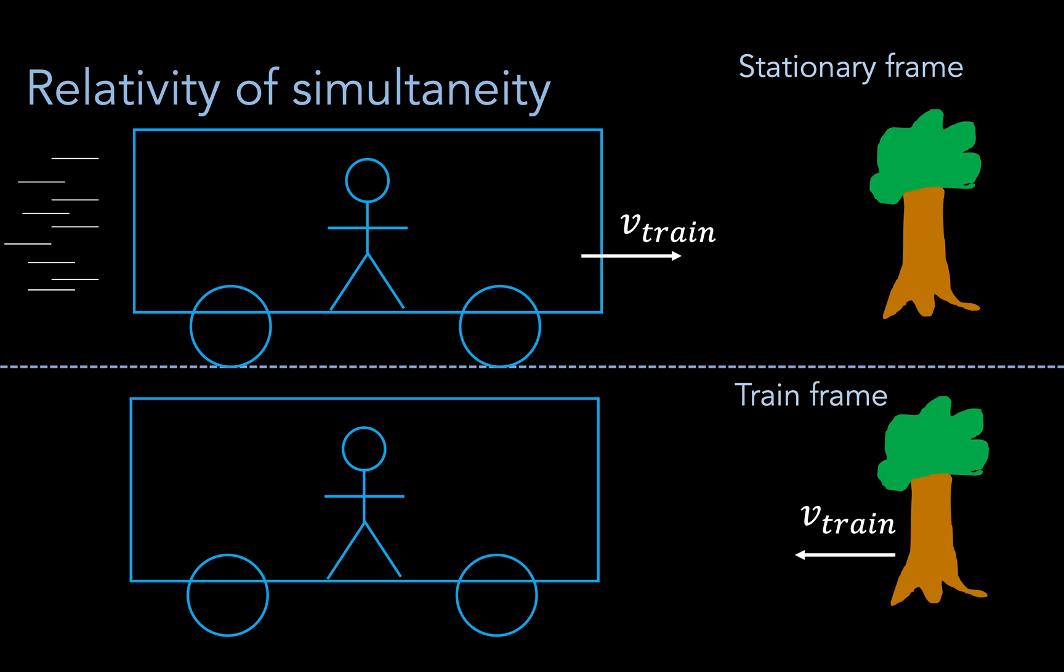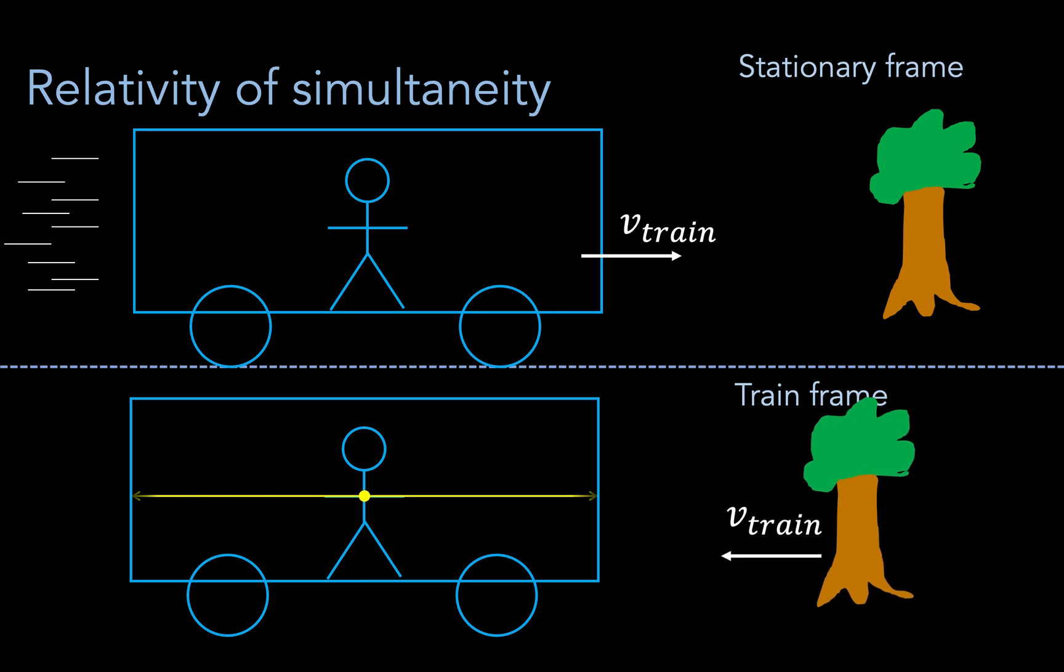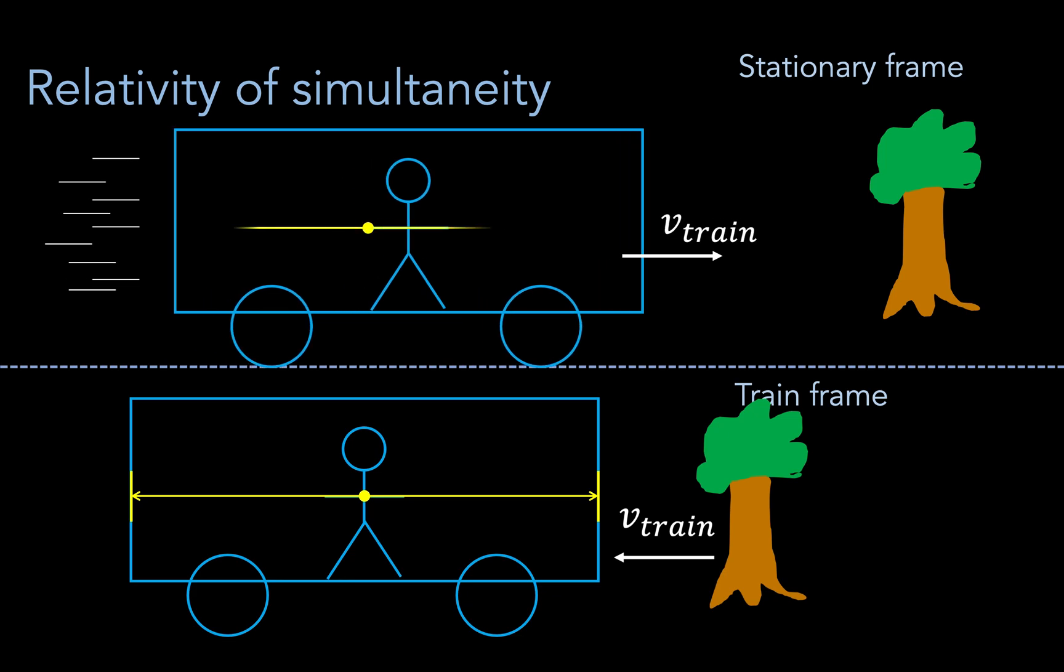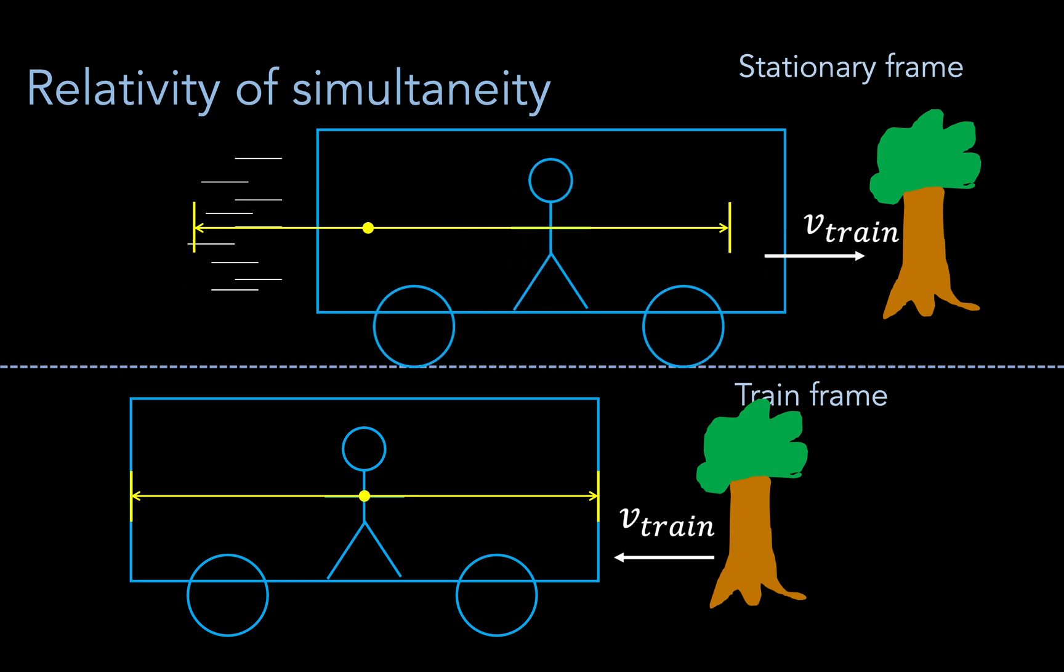So if we have a flash of light originating in the middle of some moving train, in the train's frame, the rays hit the ends of the train simultaneously, whereas in the ground frame, they reach at different times. So simultaneity depends on your reference frame.